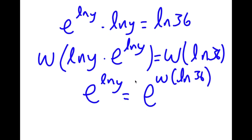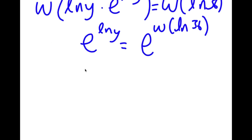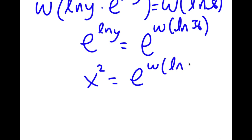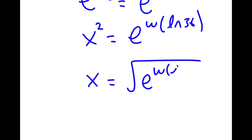Remembering that y equals x squared, I now have x squared equals e to the power of W of ln 36. Taking the square root on both sides, x equals plus or minus the square root of e to the power of W of ln 36.